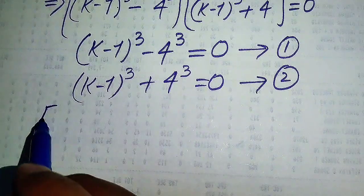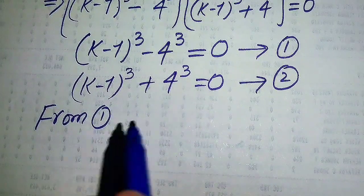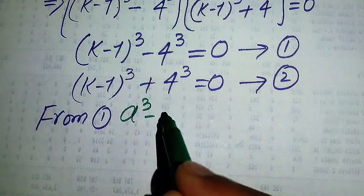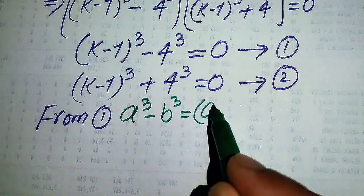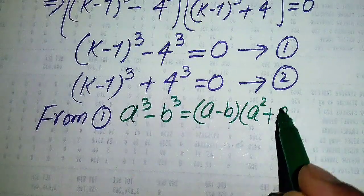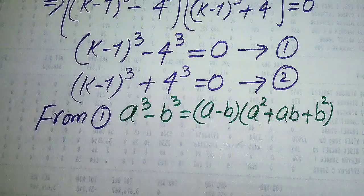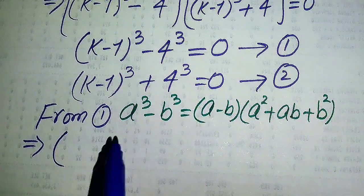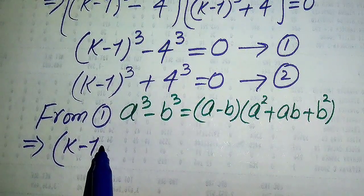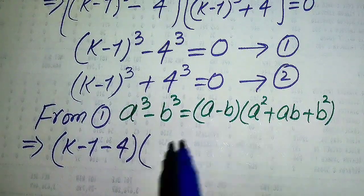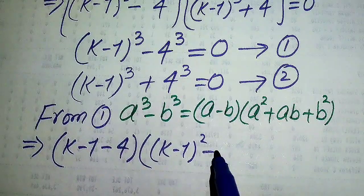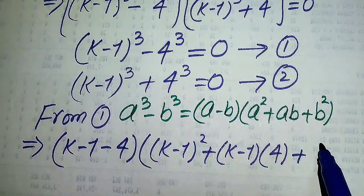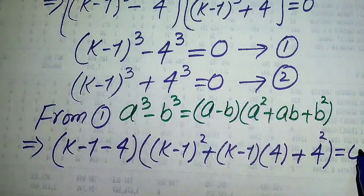We focus on equation number one. We use the cubic formula: a³ - b³ = (a - b)(a² + ab + b²). Applying this to equation one, where a = (k-1) and b = 4, we write it as (k-1 - 4) times [(k-1)² + (k-1)(4) + 4²] equals 0.